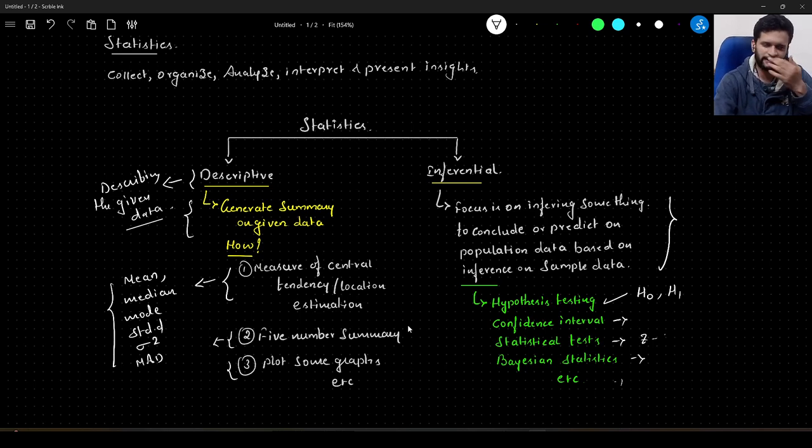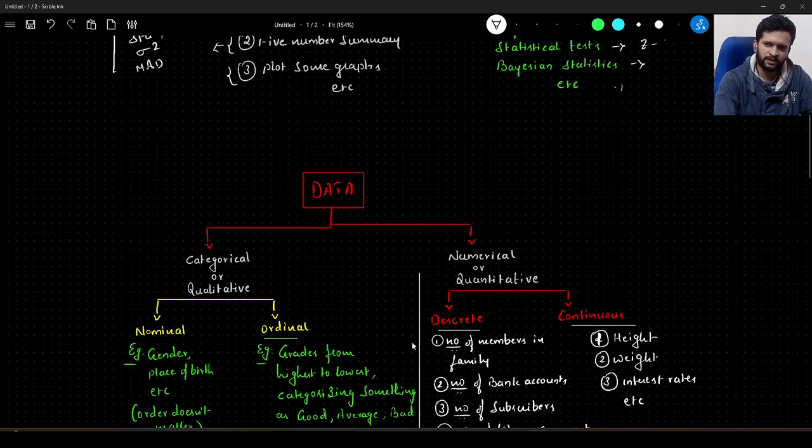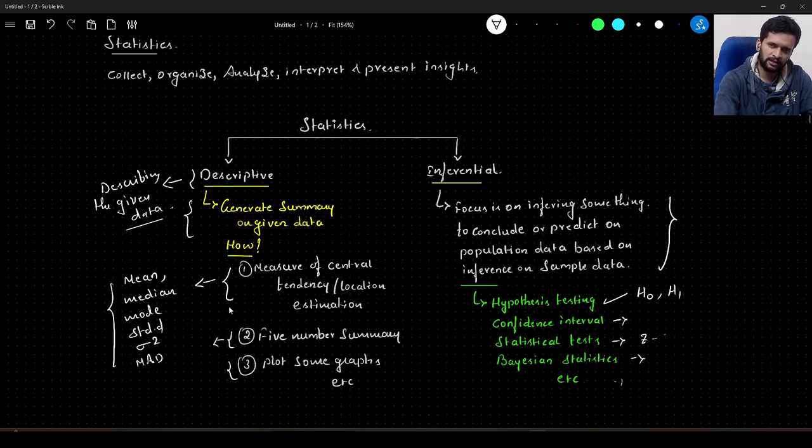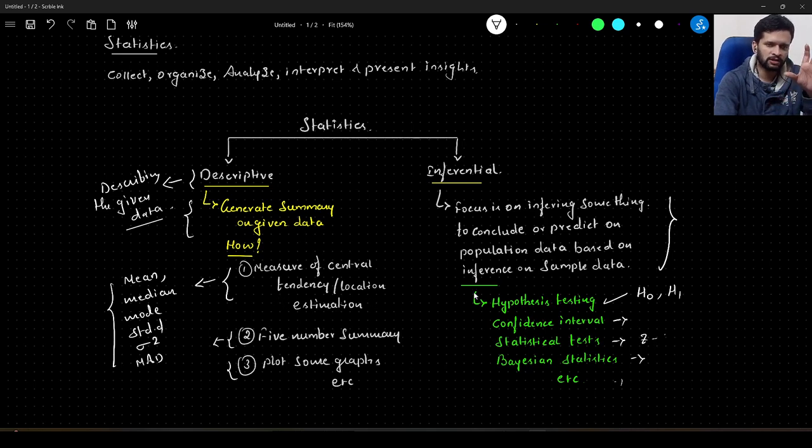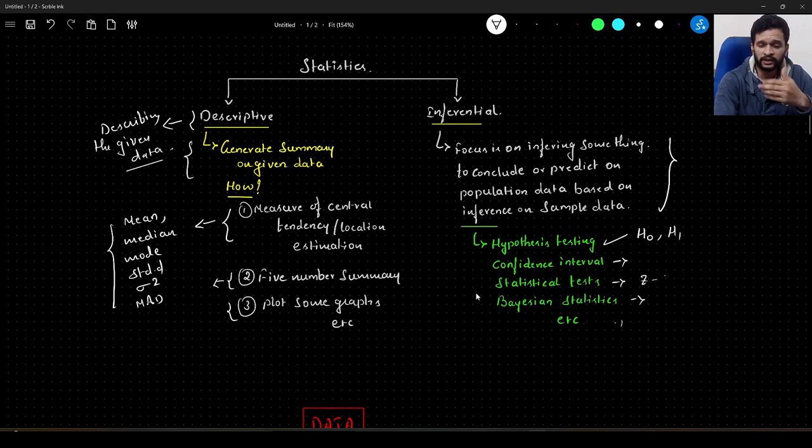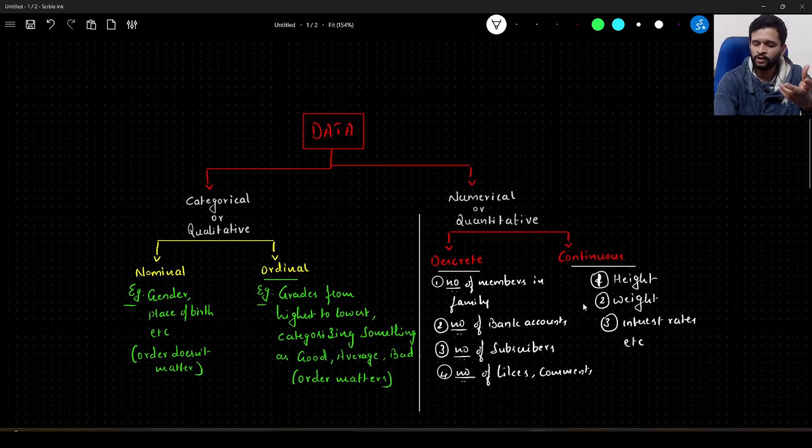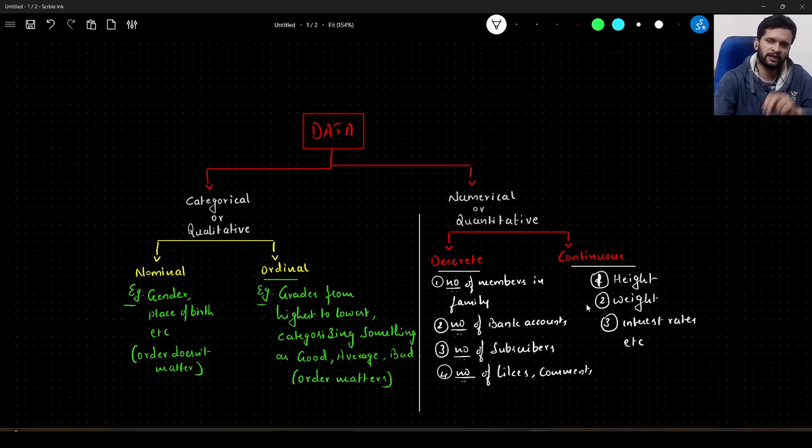Hope this particular segmentation is clear for you guys. Now, coming to data. Whatever we talked about right now, everything will be on some data. We need to understand the types of data. There are broadly speaking two types of data: one is categorical data, also called qualitative data; the other is numerical data or quantitative data.